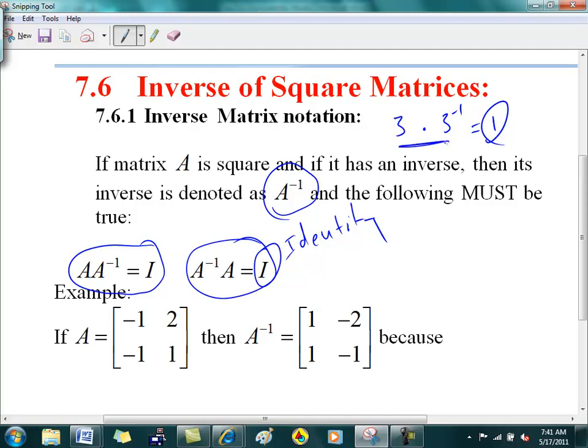Both of these have to be true. Unlike this, because in scalar land, you know that scalars, what's the technical word? Starts at a C. Commute under multiplication. Remember I told you that. Matrices don't necessarily commute under multiplication, but for two matrices to be inverses of each other, both of these must be true.